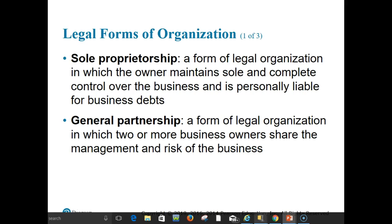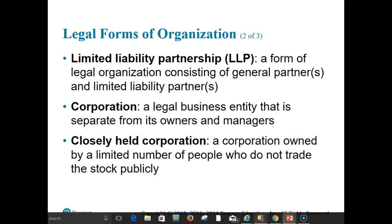A sole proprietorship is a form of legal organization in which the owner maintains sole and complete control over the business and is personally liable for business debts. A general partnership is a form in which two or more business owners share the management and risks of the business. A limited liability partnership is formed by general partners and limited partners — the general partners actually operate and manage the business and have unlimited liability; at least one general partner is necessary in an LLP, but any number of limited partners are allowed.